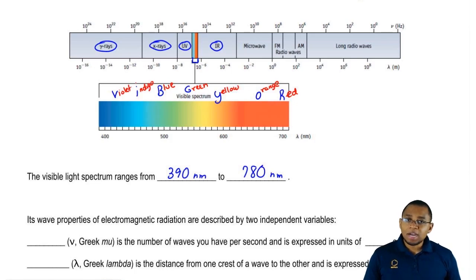Now, we're going to say here it looks like violet. Violet is around 400 nanometers whereas red is around 780 nanometers.